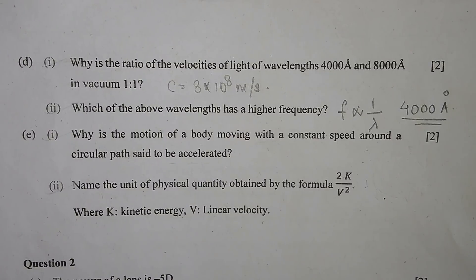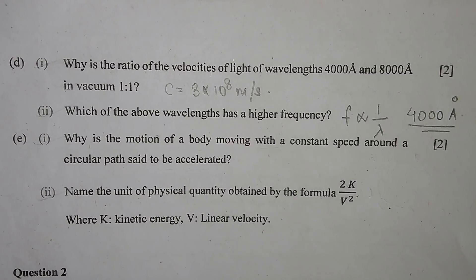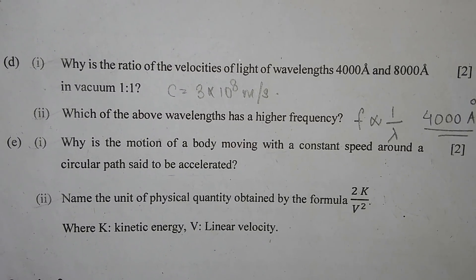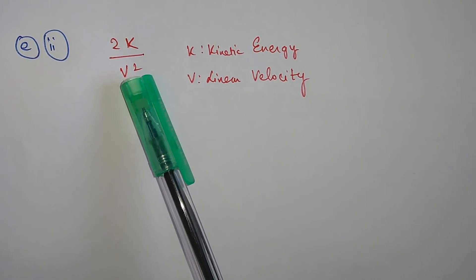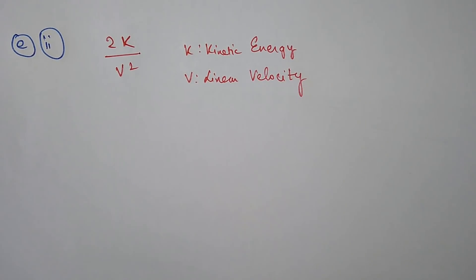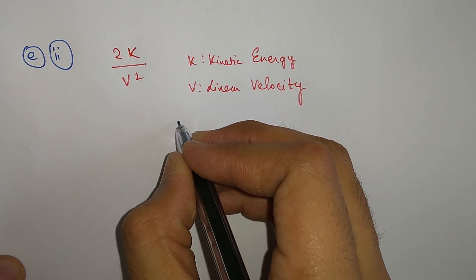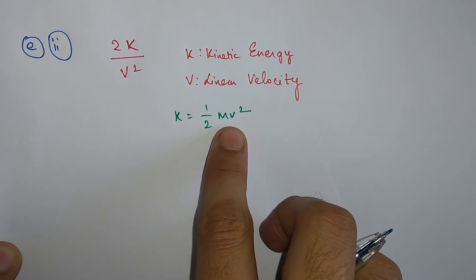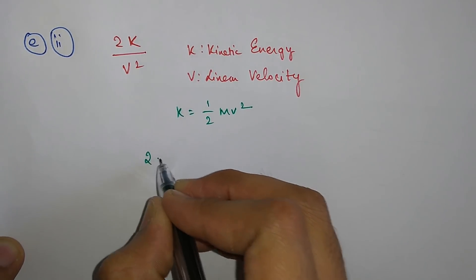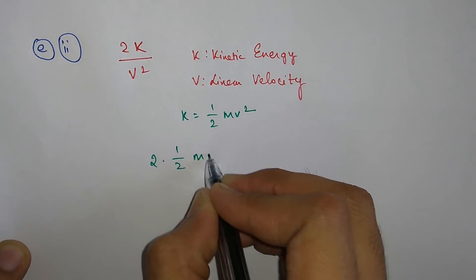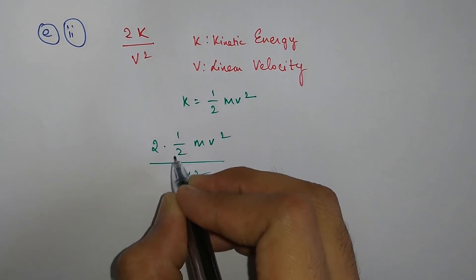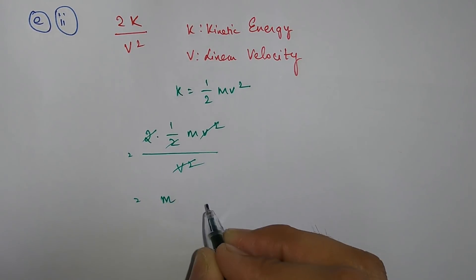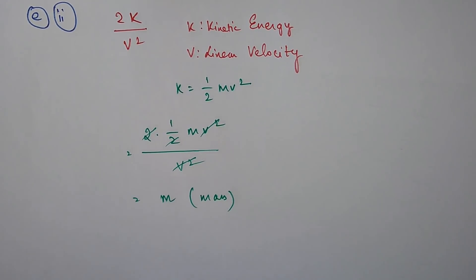Part E, number 2: Name the unit of the physical quantity obtained by the formula 2K divided by v², where K is kinetic energy and v is linear velocity. Since K = ½mv², substituting: 2 × (½mv²) / v² — the 2s cancel and v² cancels — we get M, which is the mass of the body. So the unit is kilogram.